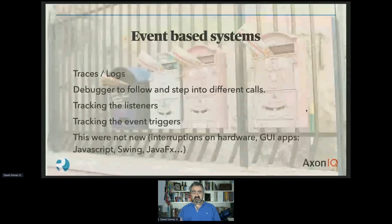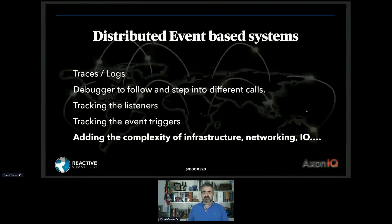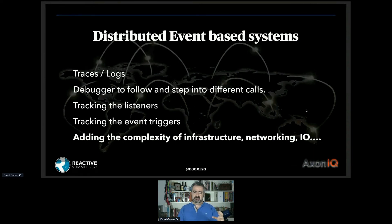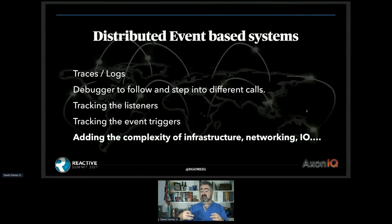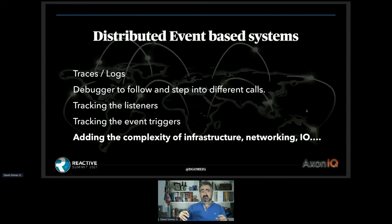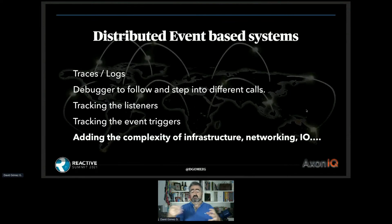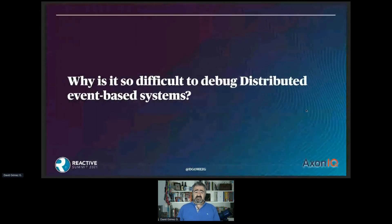Things get more complex, and even worse — nowadays we have distributed event-based systems. Now we have not two but several different components running not on the same machine but on several different machines. We are adding networking problems and distance problems to our systems. The communication mechanisms are much more complex because now we have infrastructure to take into account — problems from networking or how different components handle their input and output.